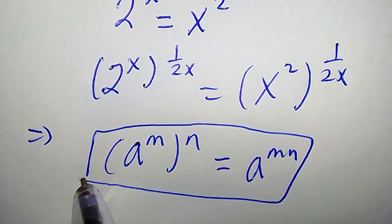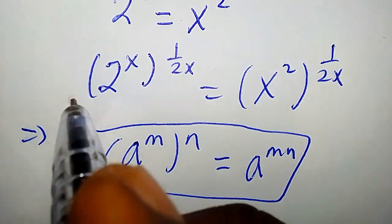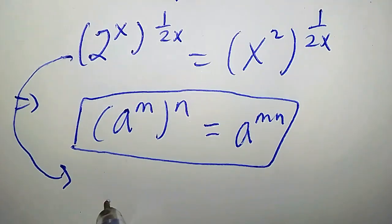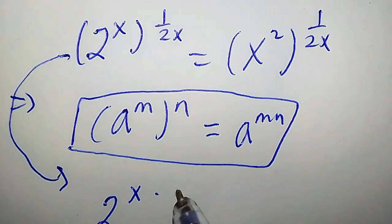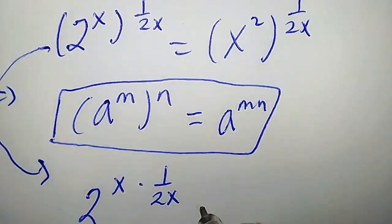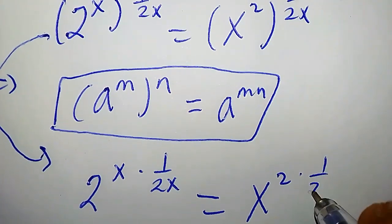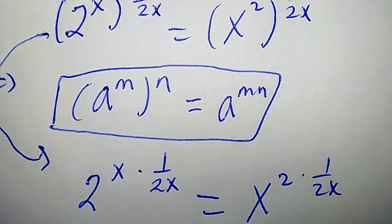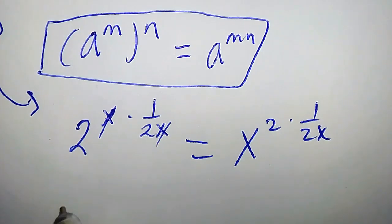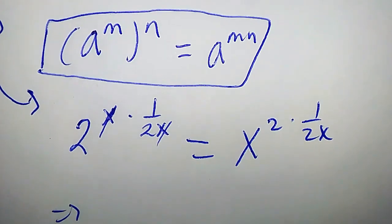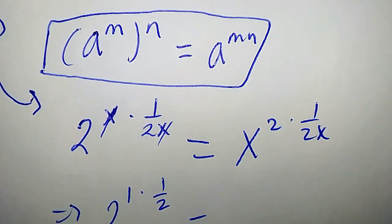From here we have 2 to the power of x times 1 over 2x equals x to the power of 2 times 1 over 2x. Clearly x cancels with x, so on the left side we have 2 to the power of 1 times one-half, which equals x to the power of 1 over x.